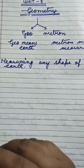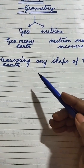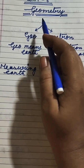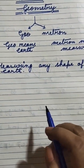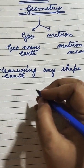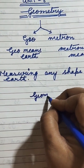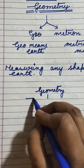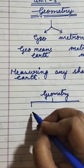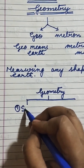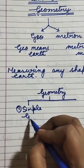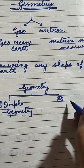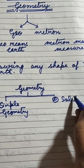So students, Geo means Earth and Metron means measure. So measuring any shape of the Earth is called Geometry. Now, Geometry is divided into two parts: number one is simple geometry and number two is solid geometry.